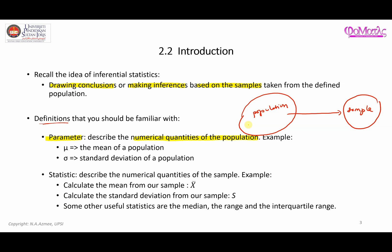For example, if you are able to obtain all the subjects in a population and you calculate the mean of that, this is normally represented as mu. So mu represents the mean of a population, and that is an example of a parameter. Similarly, if you use all the subjects in the population and calculate the standard deviation, that is known as sigma — sigma represents the standard deviation of a population.